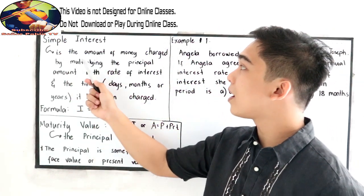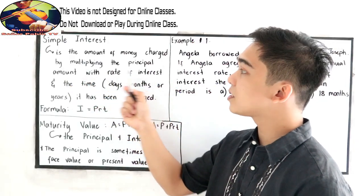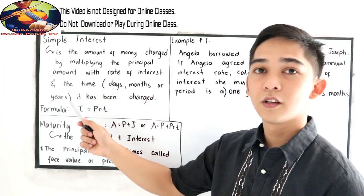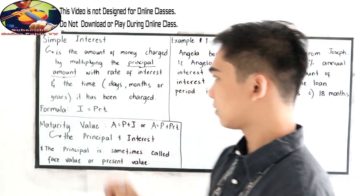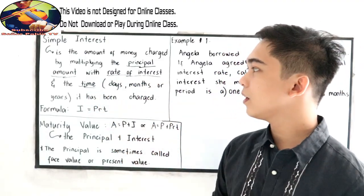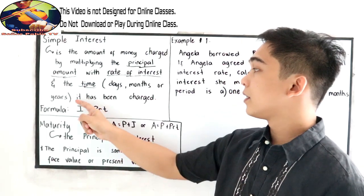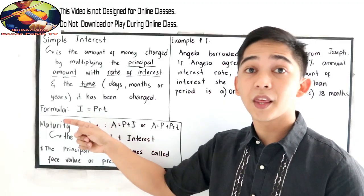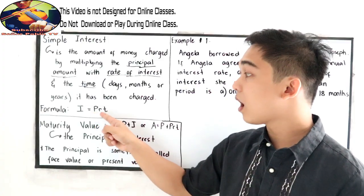Simple interest is the amount of money charged by multiplying the principal amount with the rate of interest and time. So notice we have the principal amount, the rate of interest, and time. So time can be in days, months, or years. It has been charged. So our formula for the simple interest is interest is equal to P, R, T.